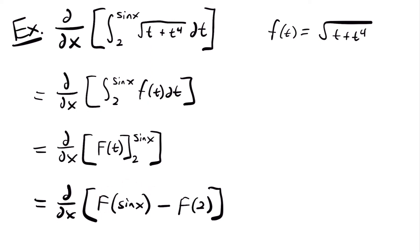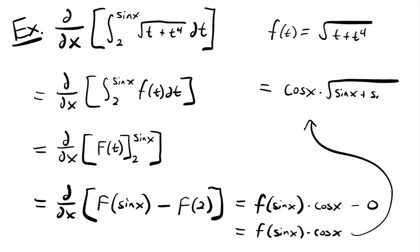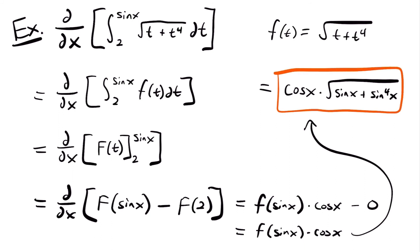Evaluating for sine x and 2, our next step is the derivative of capital F of sine x minus capital F of 2. We need the chain rule for the first term: the outside function is the antiderivative and the inside function is sine x. Our derivative equals small f of sine x times the derivative of sine x, which is cosine x. The derivative of capital F of 2 is 0 since it's a constant. So this equals f of sine x times cosine x.